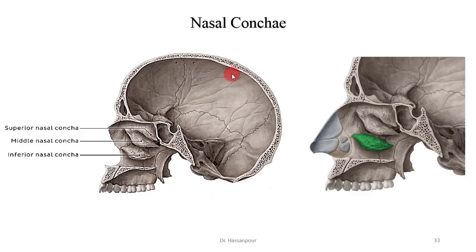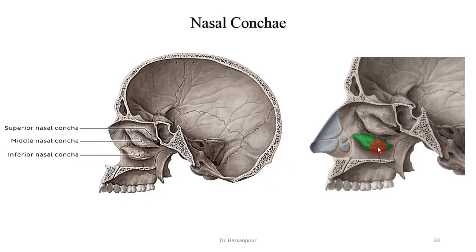The next bones are the inferior nasal conchae. Within the nasal cavity, there are three pairs of nasal conchae — projections of thin rolled bone which humidify, warm, filter, and direct the air we breathe. The superior and middle nasal conchae are projections of the ethmoid bone and are considered part of the neurocranium. However, the inferior nasal conchae do not project from the ethmoid bone and are instead considered separate facial bones. They are also typically the most visible conchae through the anterior nasal aperture.